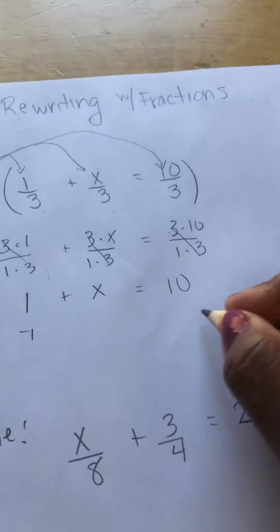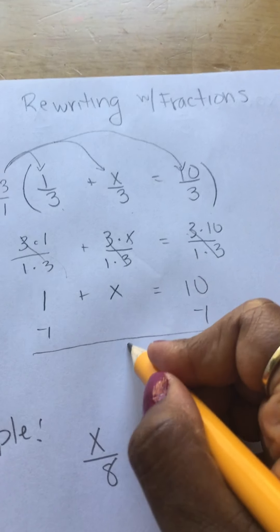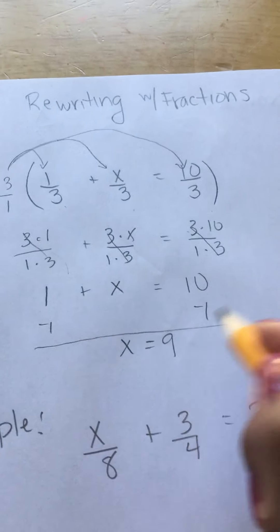Subtract 1, or do the opposite of 1 on both sides. We have x equals 9. That's perfect. That's the answer.